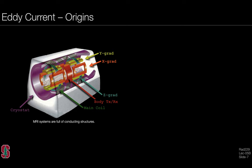The origins of eddy currents arise from the MRI hardware system. The gradient hardware, body transmit system, and main coil windings in the cryostat are among the essential components. The MR system is full of conducting metallic structures that can support currents, and currents running through a metallic structure generate a magnetic field. This is fundamentally the origin of eddy currents.